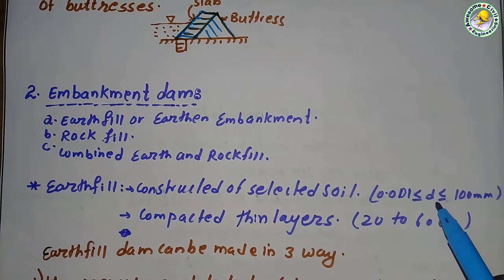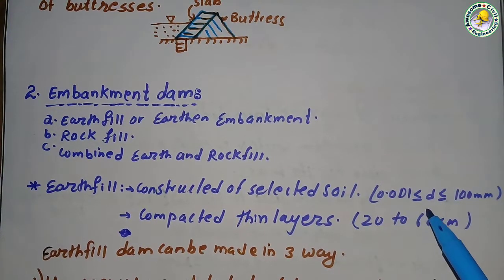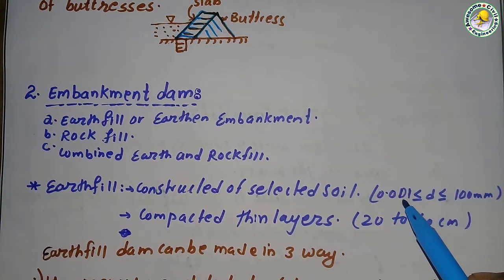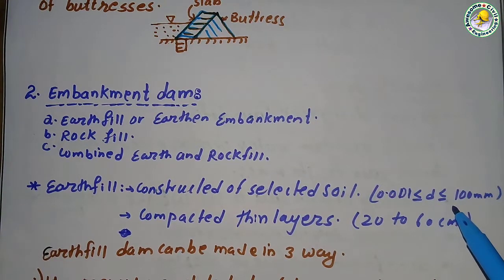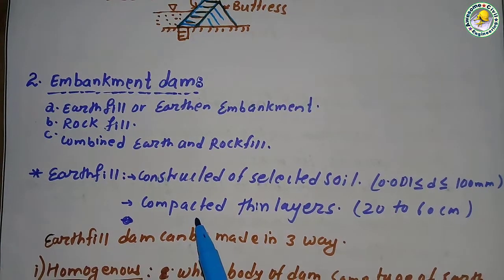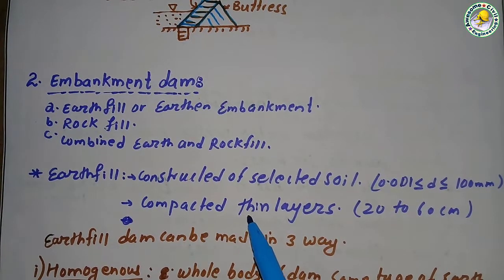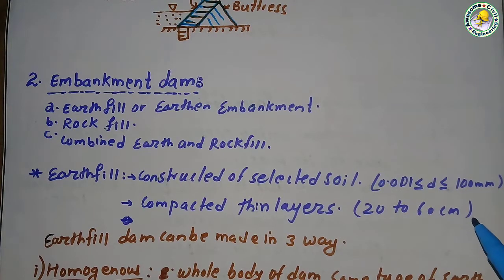Earth fill dams are constructed using selected soil only, where the diameter of the soil particles is always greater than or equal to 0.001 mm and less than or equal to 100 mm. The earthen dam is compacted in thin layers of 20 to 60 centimeters.